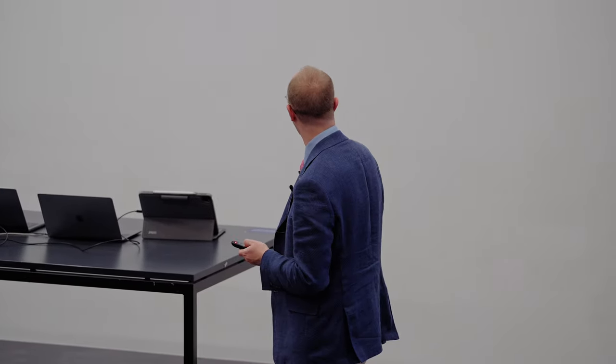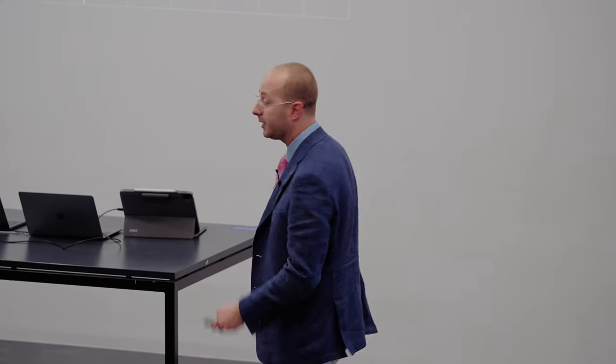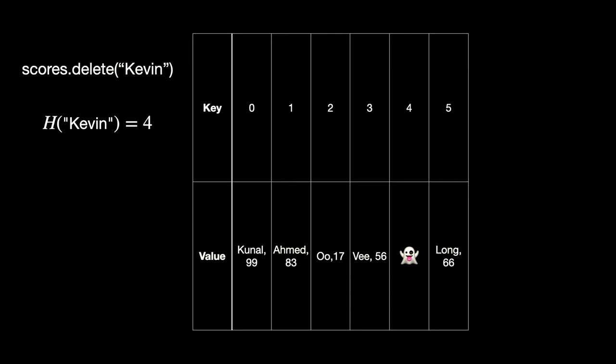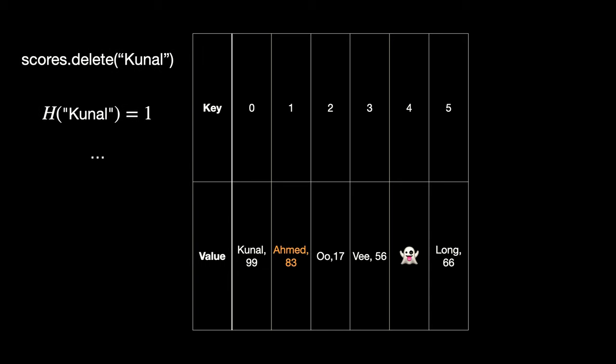We need some way to mark who has been deleted. So in linear probing we replace deleted items with a tombstone — colloquially known as tombstones. Now when we want to find Kunal, we go along from Ahmed, then oo, then v, then hit the tombstone and skip it, continuing to the next slot where we can find Kunal.